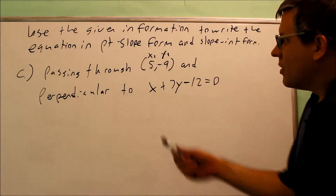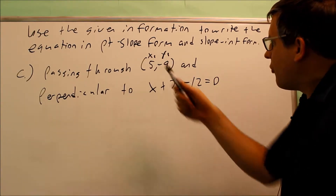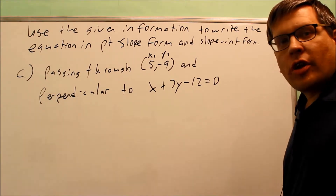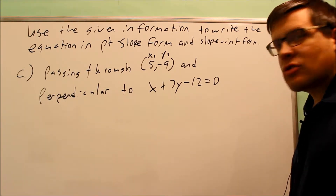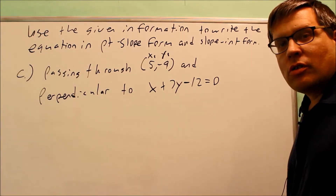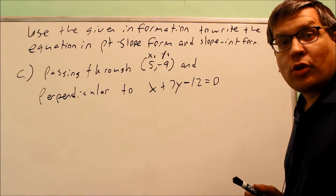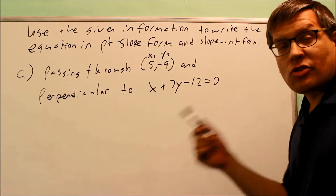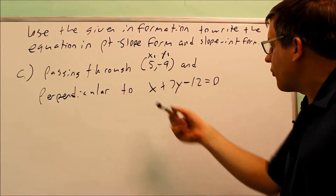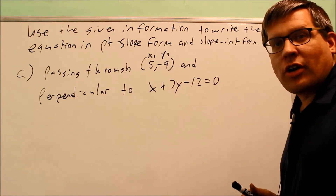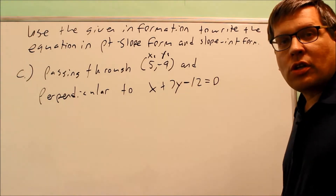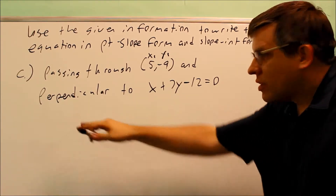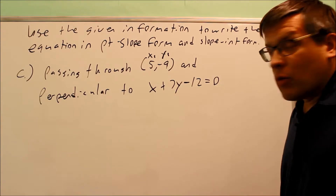Part C: passing through 5, negative 9, and perpendicular to the equation x plus 7y minus 12 equals 0. What makes this different from the previous parts is that the equation is not given in slope-intercept form. So we first need to solve it to find the slope, so we can determine which slope would be perpendicular to it.